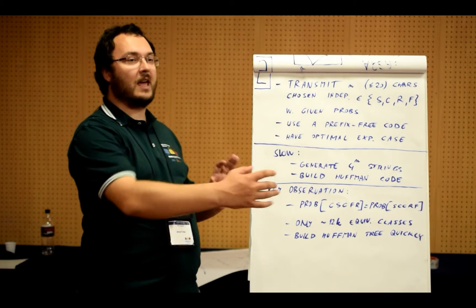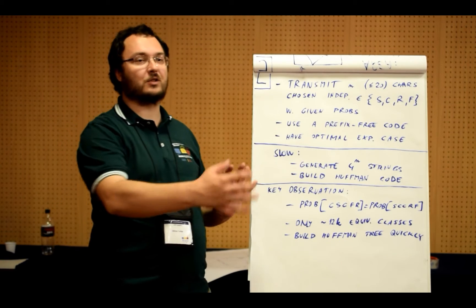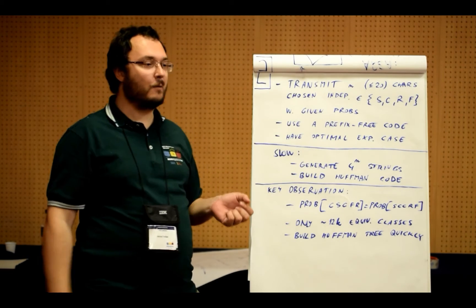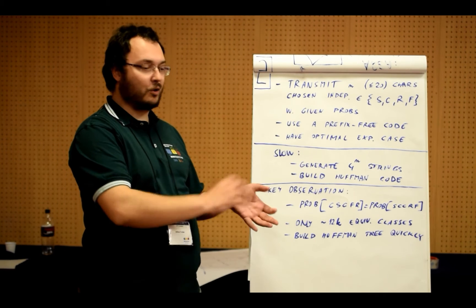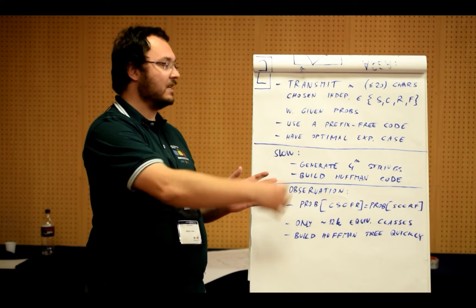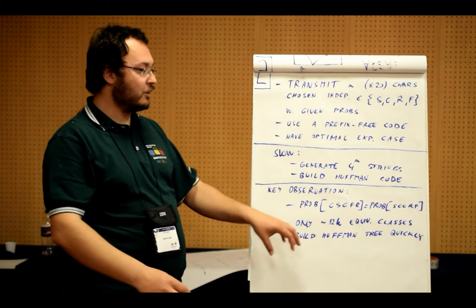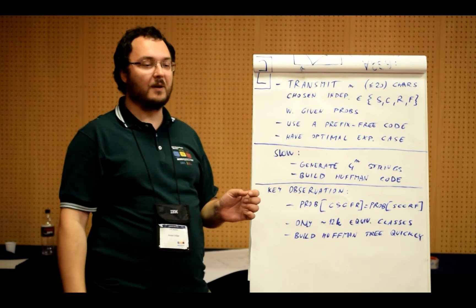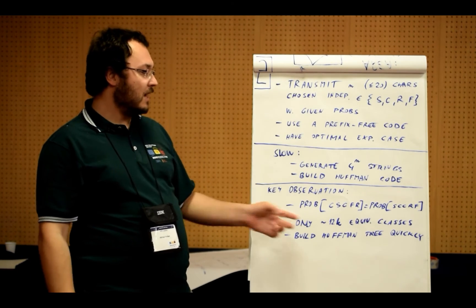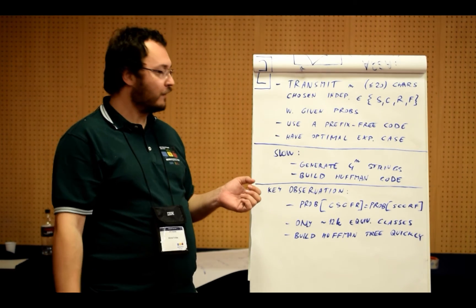So we can actually take all of the 4 to the n possible strings and divide them into equivalence classes. In each equivalence class will contain the same number of S's, C's, R's, and F's, and for each of them the probability is exactly the same. The number of equivalence classes will be only about 12,000.